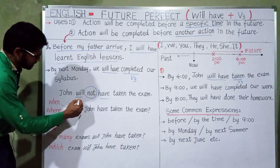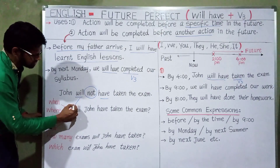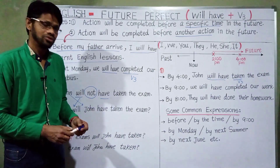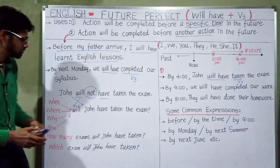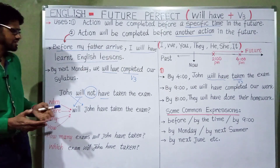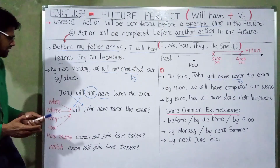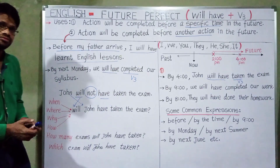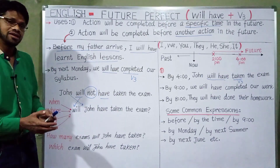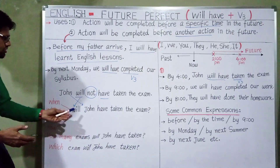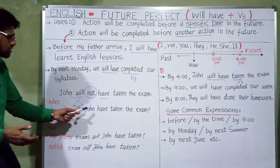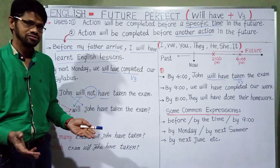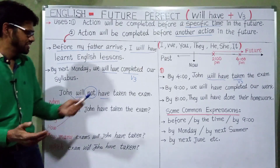How to make a question? Just switch over the words — Will John have taken the exam? The possible answers are yes or no. For WH questions: When will John have taken the exam? Where will John have taken the exam? Why will John have taken the exam? How will John have taken the exam? How many exams will John have taken? Which exam will John have taken?